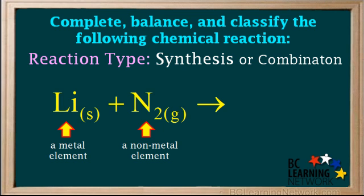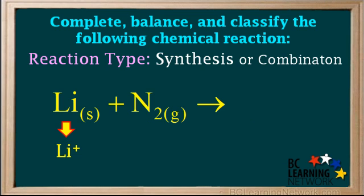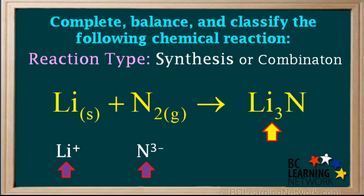When a metal element combines with a non-metal element, the product it forms is an ionic compound. To write the correct formula for an ionic compound, we need to look up the charges of the stable ions formed by the two elements. Lithium forms the stable ion Li+, and nitrogen forms the stable nitride ion N3-. The correct formula for the compound formed from Li+ and N3- is Li3N, which we'll write here as the product.